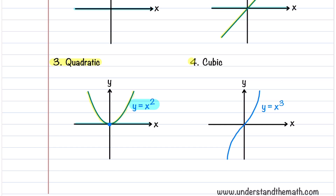Our fourth function is the cubic function, defined by the equation y = x³. The graph passes through the origin and changes concavity at the origin — from concave down to concave up — and it's defined for all values of x.